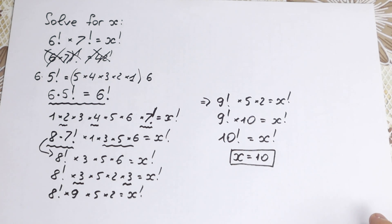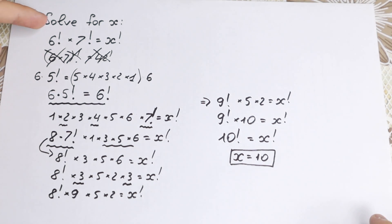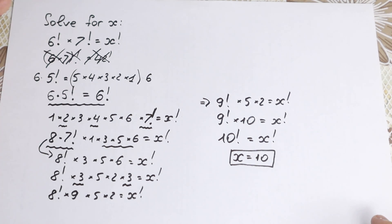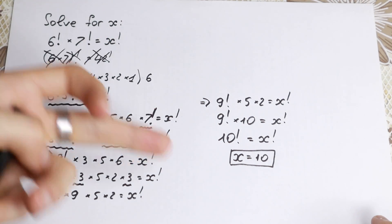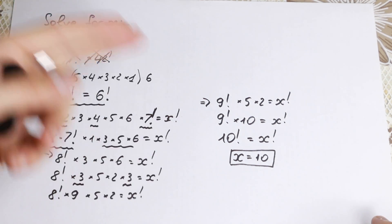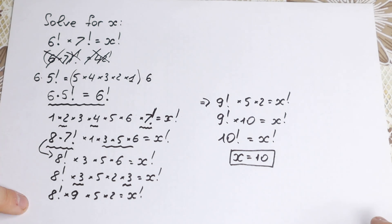A lot of students have difficulty with this because they try to compute 6 factorial and 7 factorial directly — those aren't huge numbers individually, but multiplying them gives a very large result. And then checking every factorial to find a match is tedious. This step-by-step algebraic approach is the correct mathematical explanation, so learn it and remember it.